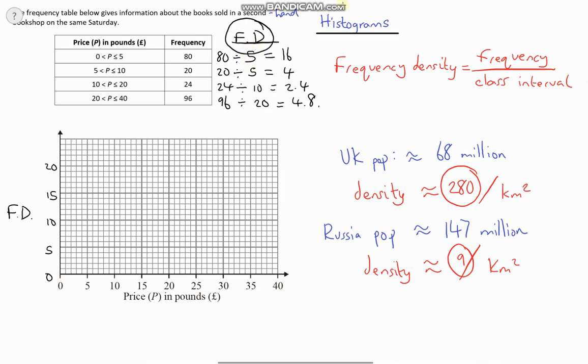I'm going to get my line tool to do this. So in the 0 to 5 category our frequency density is 16. So we're going to go up to 16. I'll make that a bit thinner. And then just going to go along to the y-axis. And now we'll do the second category. So 5 to 10 our frequency density is 4. So I'm going to go up to 4.